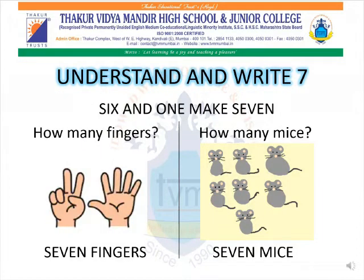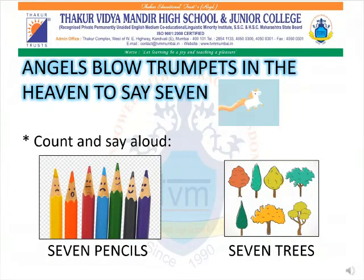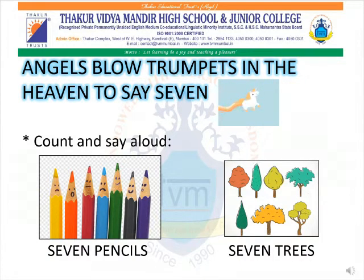Now we move on to number 7. Understand and write 7. 6 and 1 make 7. How many fingers? 7 fingers. How many mice? 7 mice. Angels blow trumpets in the heaven to say number 7. Count and say aloud: 7 pencils, 7 trees.